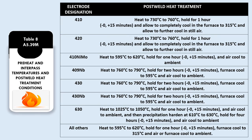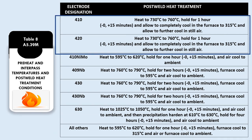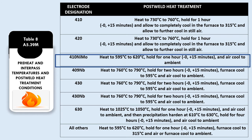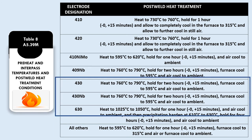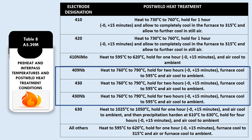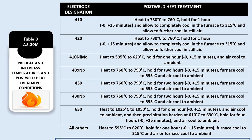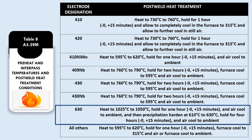Table 8 shows the preheat, interpass temperatures, and post-weld heat treatment conditions. It gives specific post-weld heat treatment for each designator. 410 and 420 indicate PWHT at 740 to 760 degrees Celsius; 410NiMo at 595 to 620 degrees Celsius; 490Nb, 430, and 430Nb at 760 to 790 degrees Celsius; 630 at 1025 to 1050 degrees Celsius. For all others, PWHT is recommended.